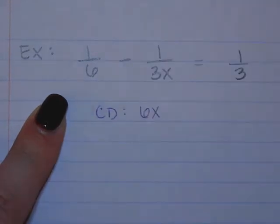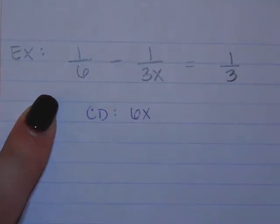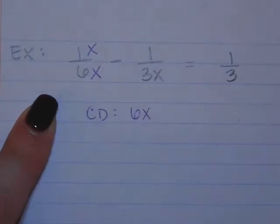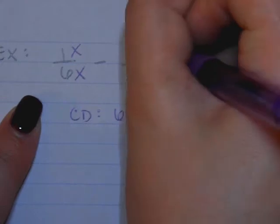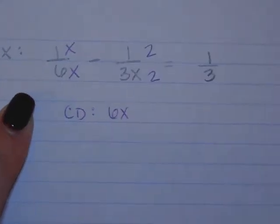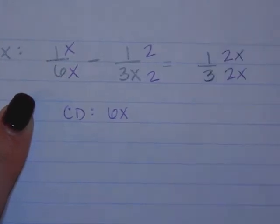So the first fraction has a 6. What does it need? An X. The second fraction has a 3X. What does it need? 2. The third fraction has a 3. What does it need? 2X. And then what do we do?